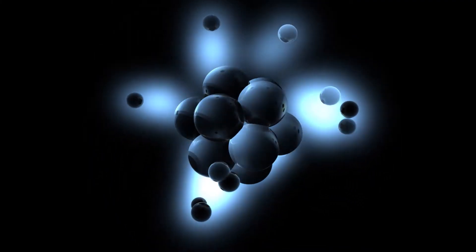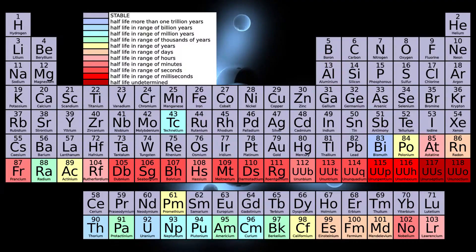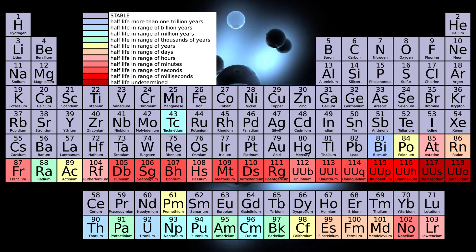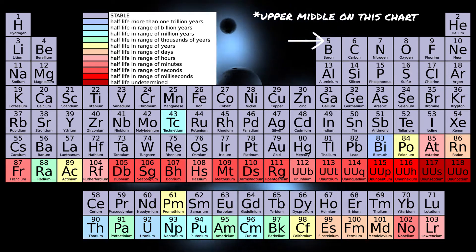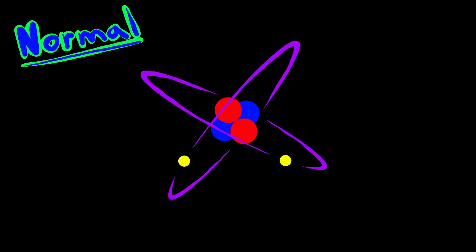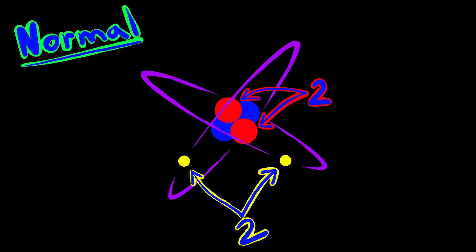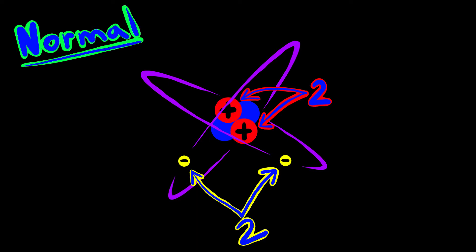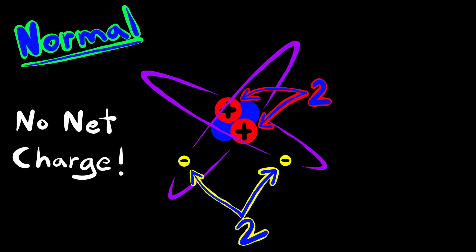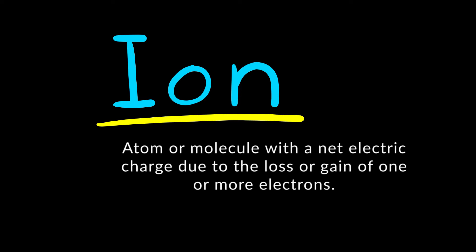An atom is the smallest part of an element, and each atom on the periodic table of elements has a unique number of protons identified by the atomic number in the upper left side of its box. A stable atom is one in which there are an equal number of protons and electrons. In a normal atom, the positive charges of the protons and the negative charges of the electrons cancel each other out, so there is no net charge. If an atom contains one less electron or one extra electron, it will have a net negative or net positive charge — this is what we call an ion. It's just a fancy way of saying an atom has a net positive or net negative charge.